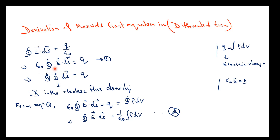Since ε₀E = D, substituting into the integral gives ∫D·ds = Q. When we move ε₀ to the other side and substitute D for ε₀E, we can write D·ds = Q.